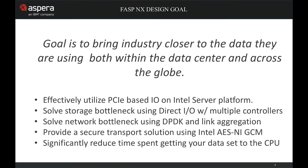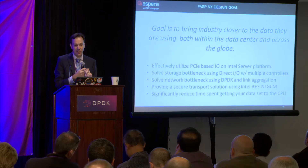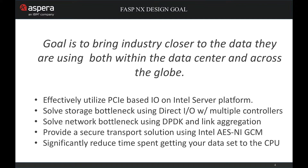We also solve the network bottleneck. With DPDK, not only do we handle a single network card, but we can aggregate multiple network cards together to give you throughput limited solely by the PCI Express bus. We also provide a secure transport solution by taking advantage of hardware AES support on the Intel microprocessor — all of which means significantly reduced time getting data from wherever it is to your target CPU anywhere in the world.